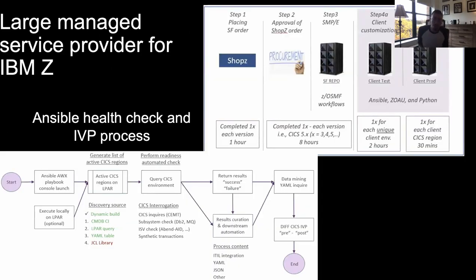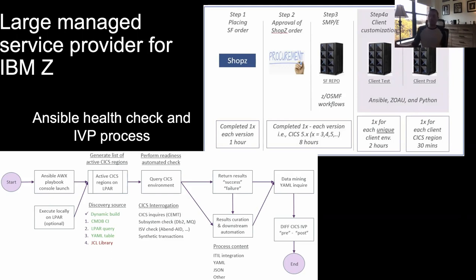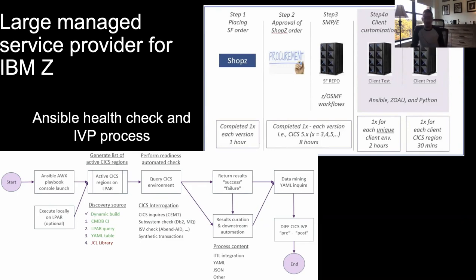The next customer is a big managed service provider on the IBM Z side. This customer has seen a ton of improvements in agility from their automation perspective, but also from a skills perspective — they're leveraging the company-wide automation team, not a Z-specific team, who already had Ansible skills. They're now teaming with system programmers to build out some of this automation. Their CICS IDP process has been accelerated from two hours down to about 20 minutes.